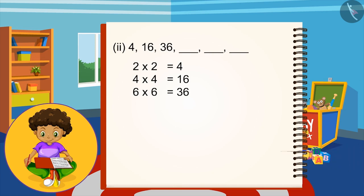Poltu thought after 6 the next even number will be 8, so 8 times 8, that is 64. Children, what will be the next 2 numbers in this pattern? You can pause the video and think about it. Yes, next even number is 10, so 10 times 10 is 100, and 12 comes after 10, so 12 multiplied by 12 gives 144.